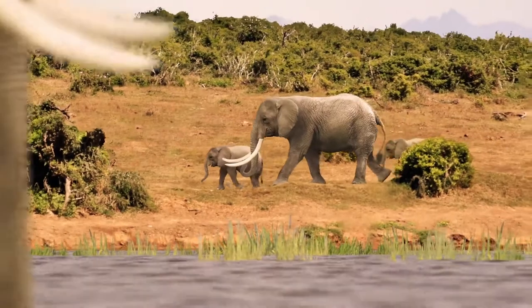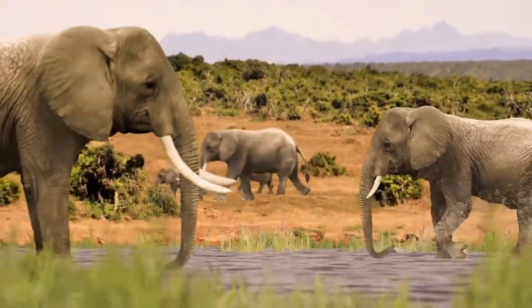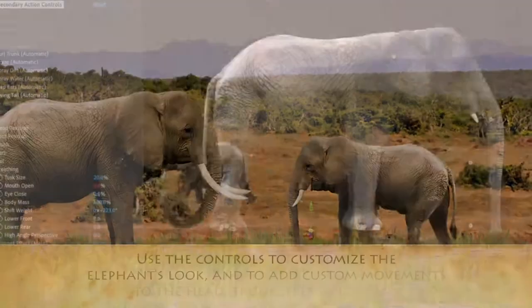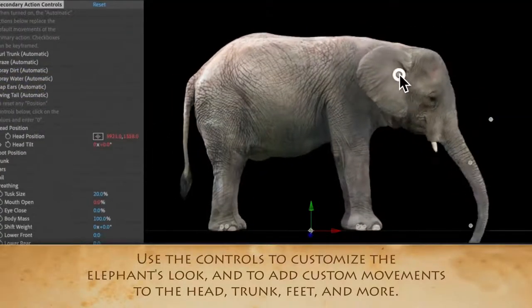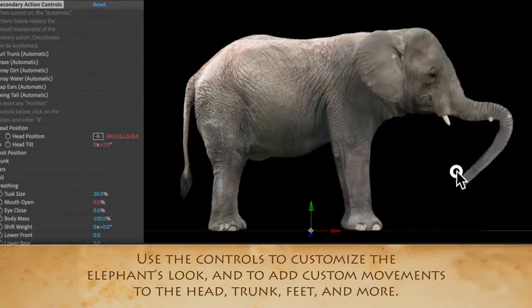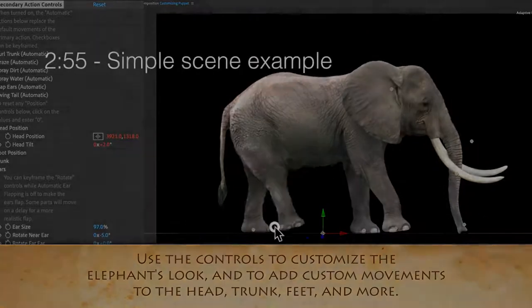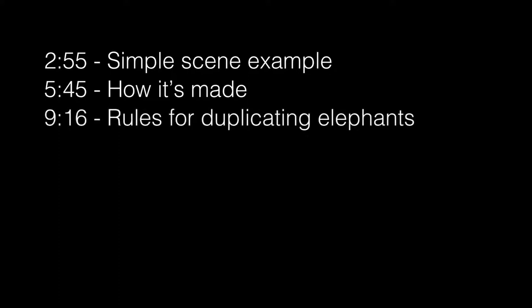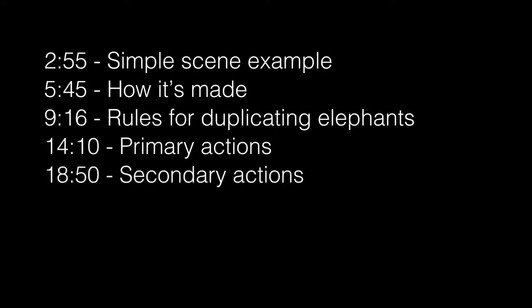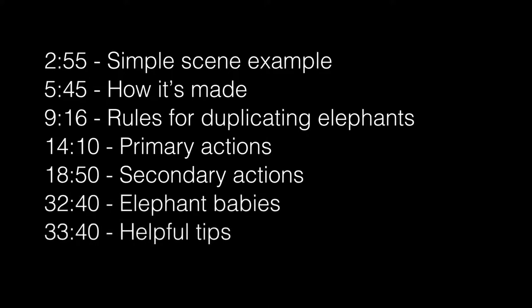So let's get on with the tutorial. This is an After Effects template and it includes both an Asian and African adult elephant which you can customize to look more male or female, and also a baby for each species. It comes with a bunch of preset movements to choose from, or you can move them manually using the controls. I'm going to start by showing you how to use the effect in the simplest scene possible, then explain the effect and summarize how it's made, then explain some basic rules for duplicating elephants or copying elephants into a new comp. Then I'll go into customization, covering primary actions, transitions, secondary actions, and lastly some helpful tips.